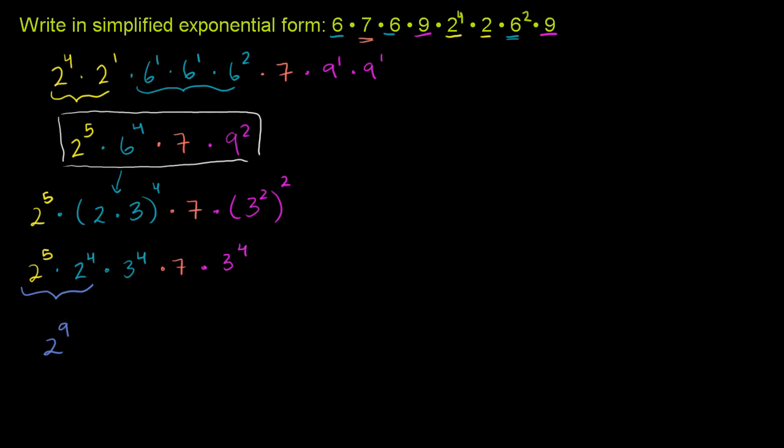Then you have your 3's over here. Let me do that in green. You have 3 to the 4th and 3 to the 4th. What's that going to be? That's going to be times 3 to the 4 plus 4th power, or 3 to the 8th power. And then finally you have this 7 sitting over there.